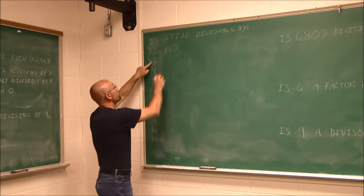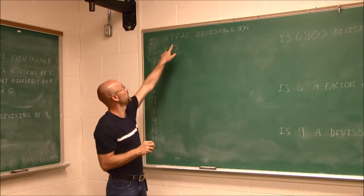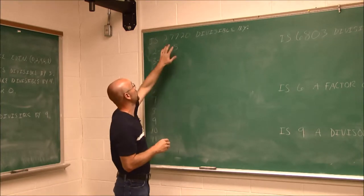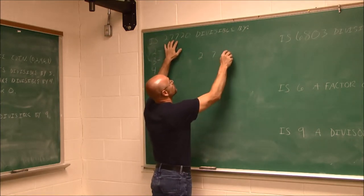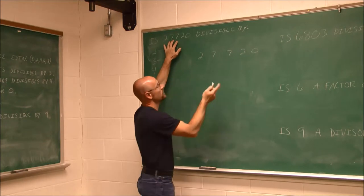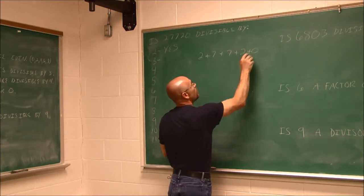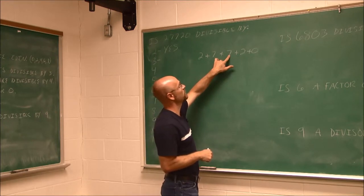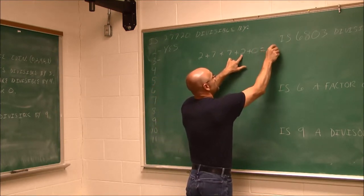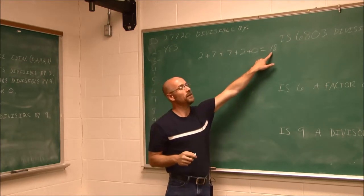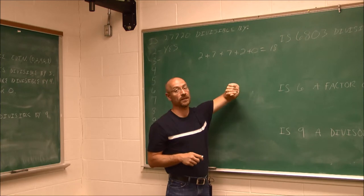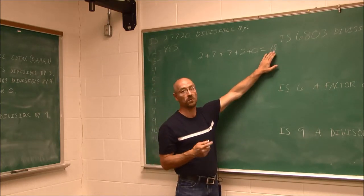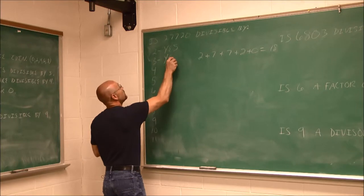Is it divisible by 3? We have to sum all the digits. Taking 27,720: 2 plus 7 is 9, plus 7 is 16, plus 2 is 18, plus 0 is still 18. Is 18 divisible by 3? Yes — 18 is 3 times 6. That tells us the whole number is divisible by 3, so the answer is yes.